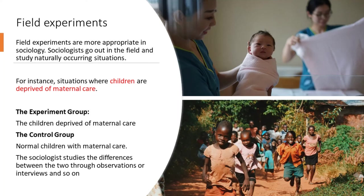Let's look at an example of a field experiment. If sociologists want to study maternal deprivation, they look for situations where children are deprived of maternal care in a real context. The experimental group would be the children deprived of maternal care. The control group would be children in normal situations with maternal care. The sociologists study the difference between the two through observations, interviews, and so on. Therefore, they are using the logic of the experiment, but not creating the experiment itself — obviously for ethical reasons.